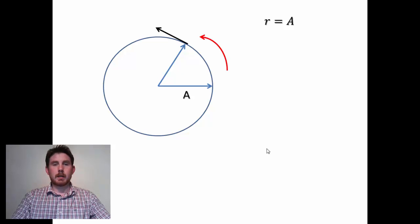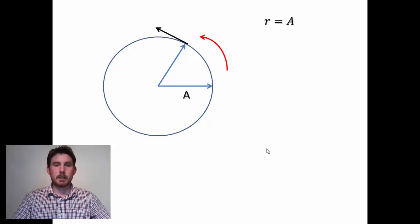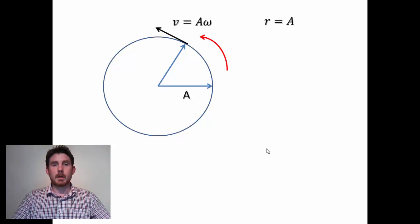An object following a circular path has a velocity that is tangential to the circular path, represented by the black line here. We label that as V, which is also equal to R omega, or amplitude omega.